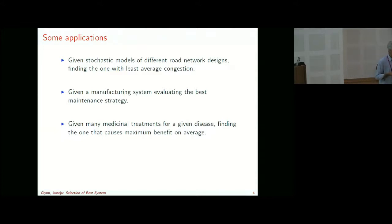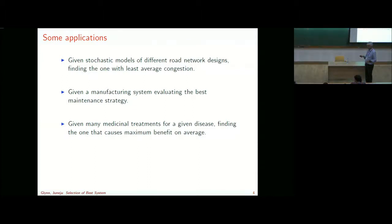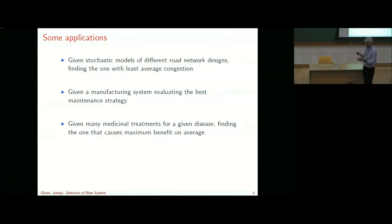Question from the audience: if you have a model of a queuing network, you know its probability law. The speaker responds: it can be a complicated network — you know how vehicles are coming in and the rules of engagement, but for the average delay, the probability distribution is far too complex to be known.